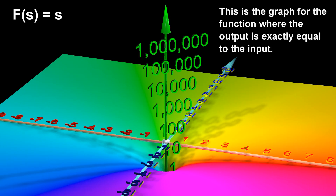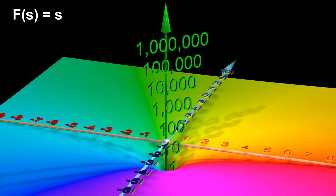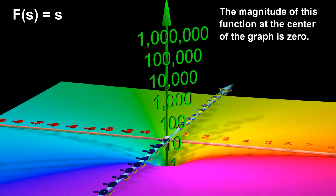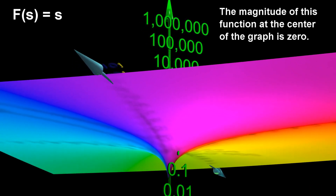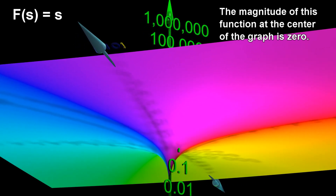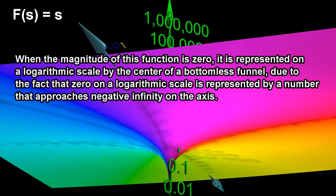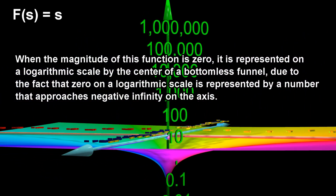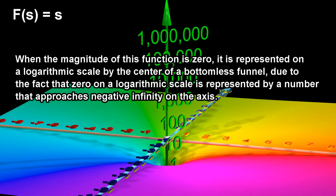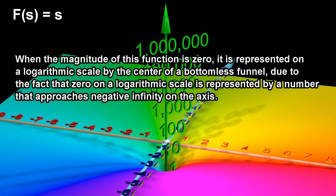This is the graph for the function where the output is exactly equal to the input. The magnitude of this function at the center of the graph is zero. When the magnitude of this function is zero, it is represented on a logarithmic scale by the center of a bottomless funnel, due to the fact that zero on a logarithmic scale is represented by a number that approaches negative infinity on the axis.